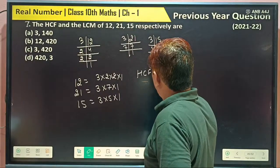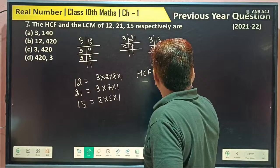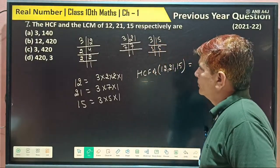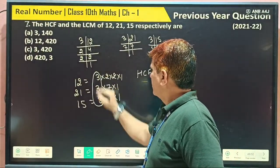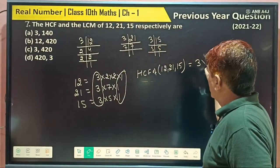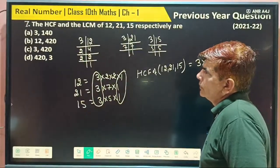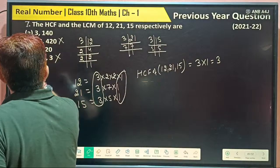So HCF of 12, 21, 15 is equal to which is common in all? Only 1 is common, and this is common. So 3 into 1, 2, 3. So this is not your answer, this is not your answer.